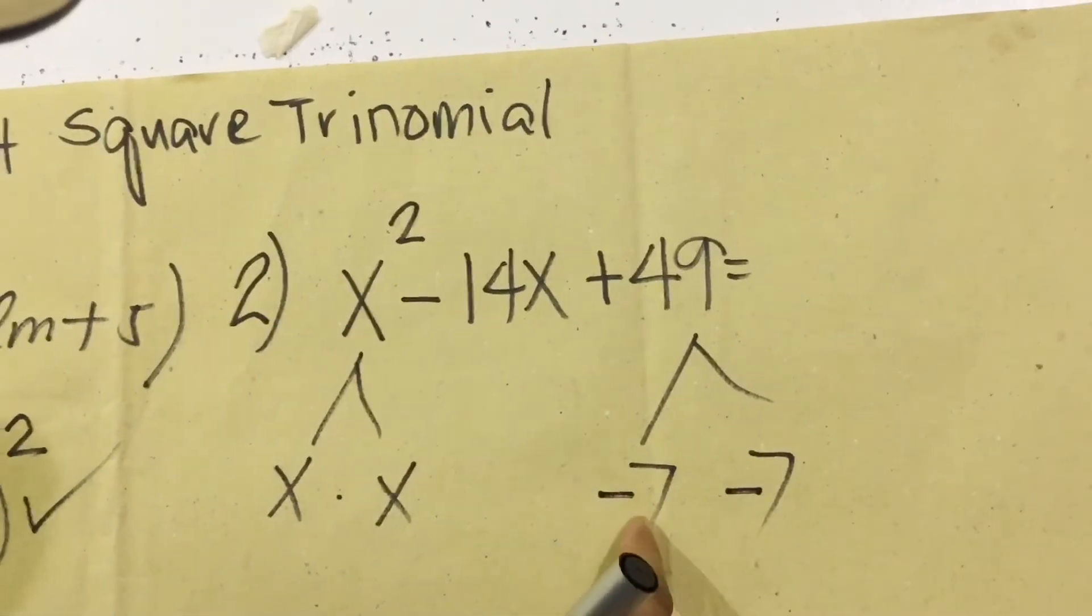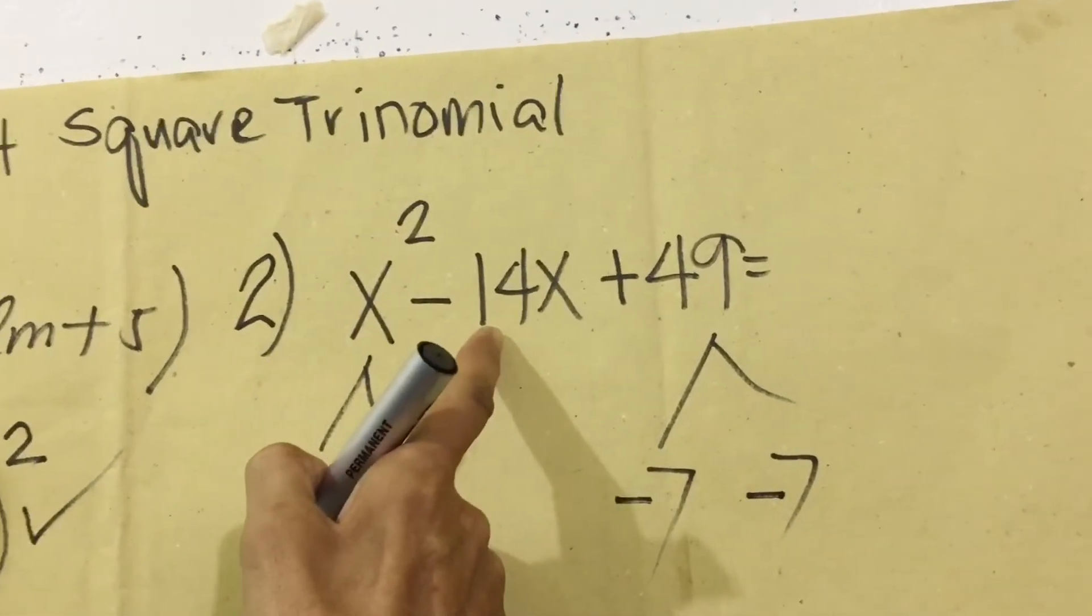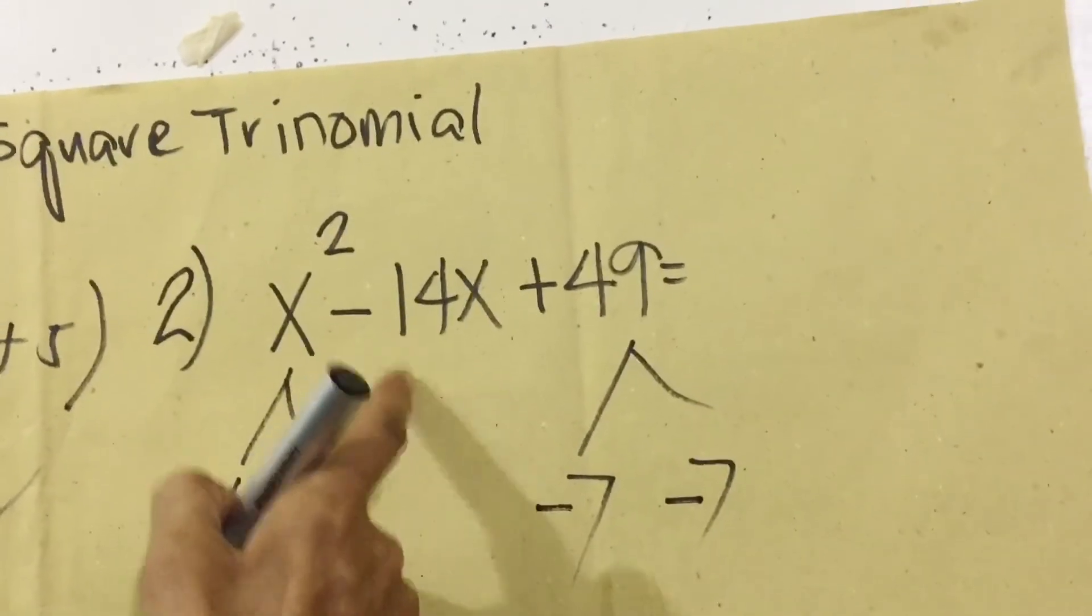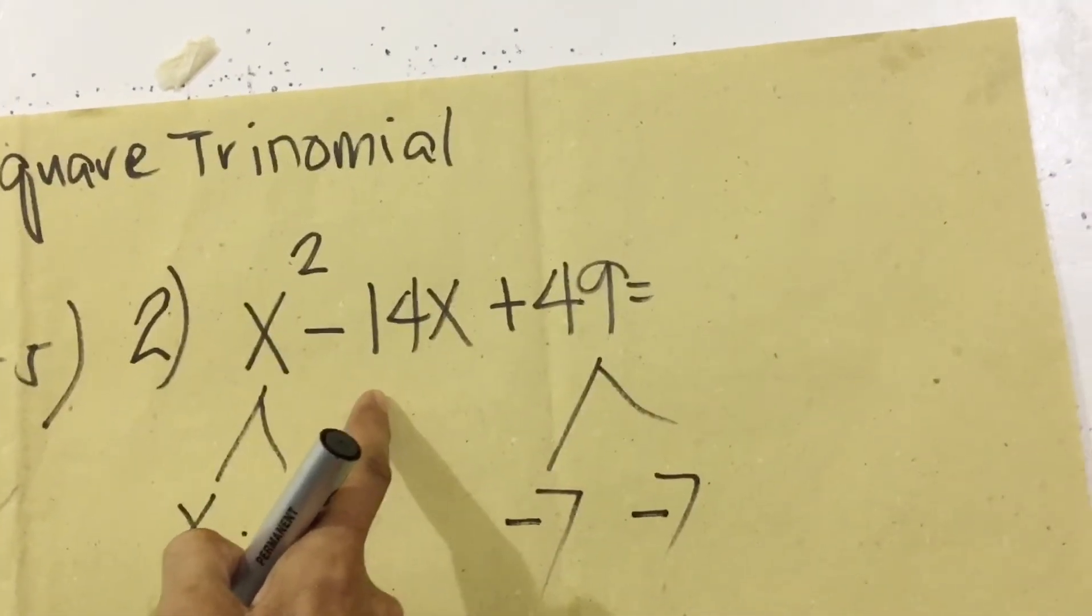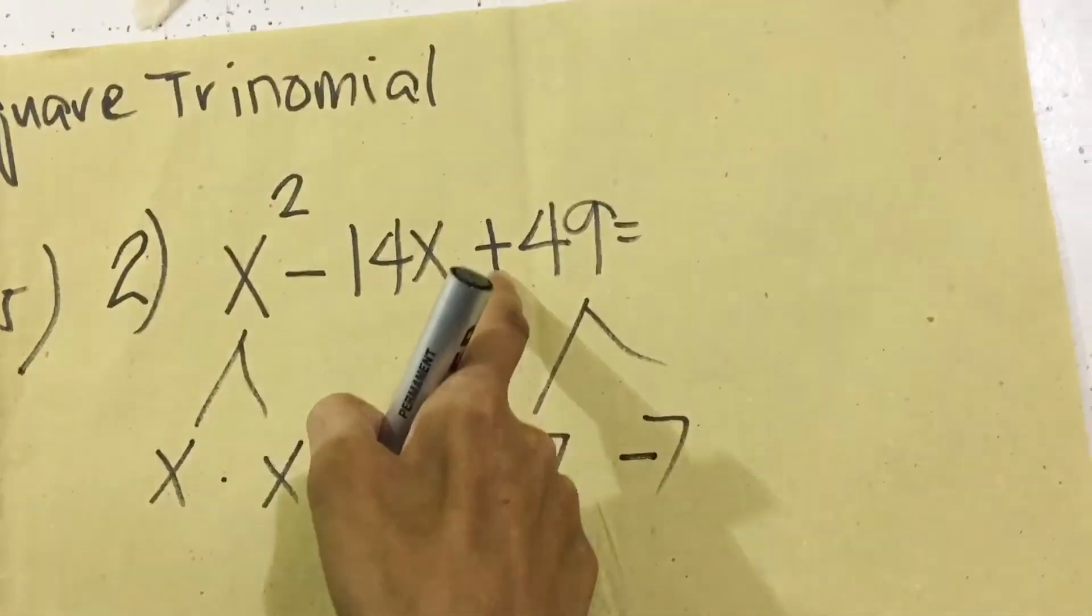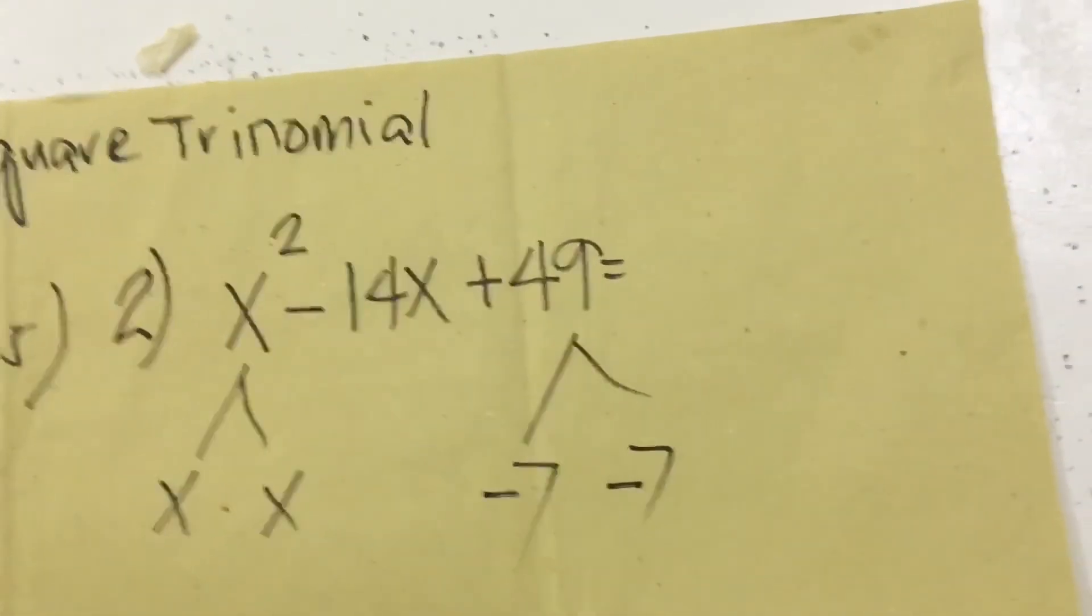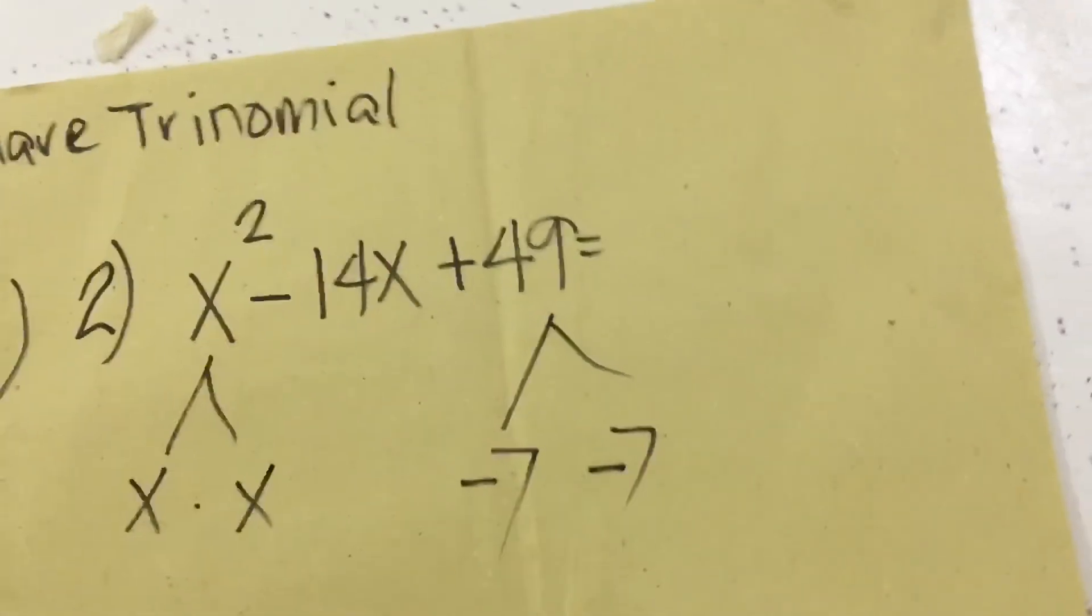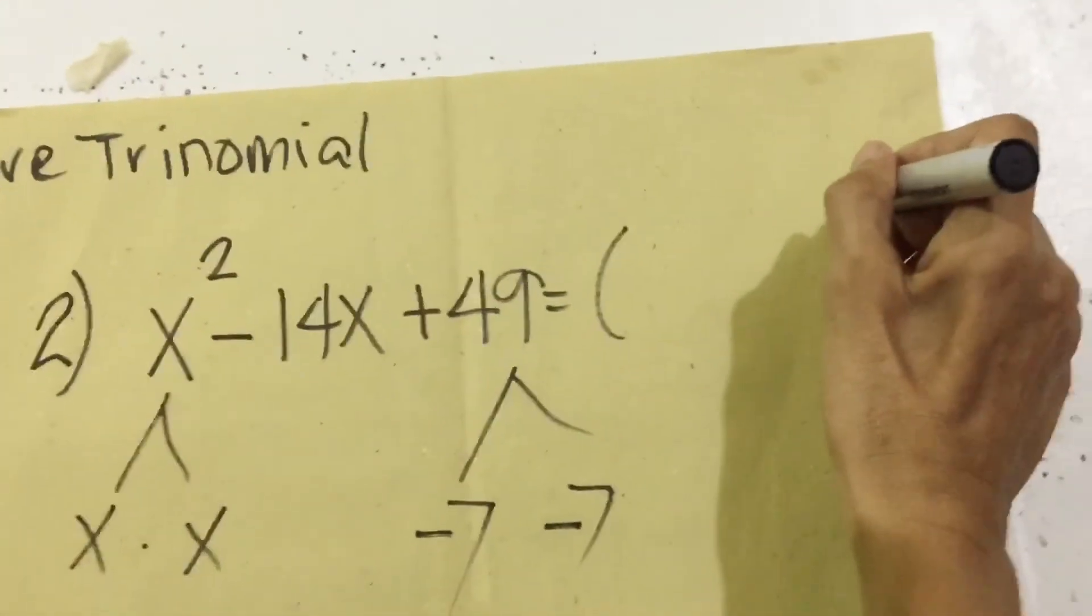If we use negative and negative here, negative 7 plus negative 7 equals negative 14x, so it's correct. Then negative times negative is positive, so it's correct also. Therefore, this is now the factor that we are looking for.